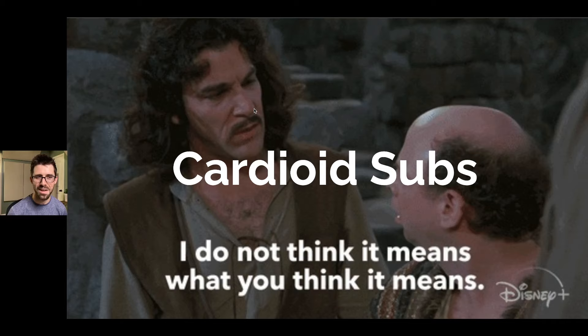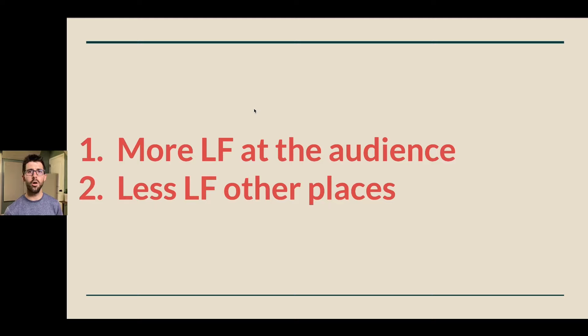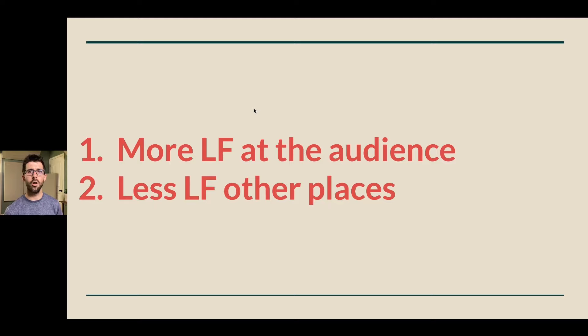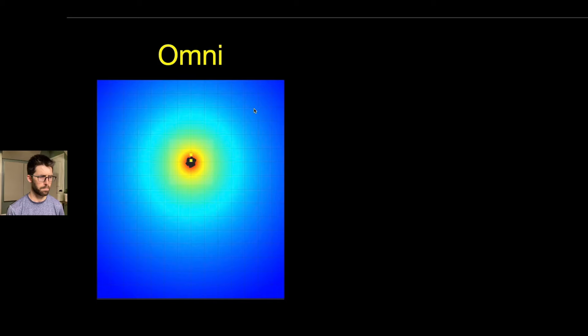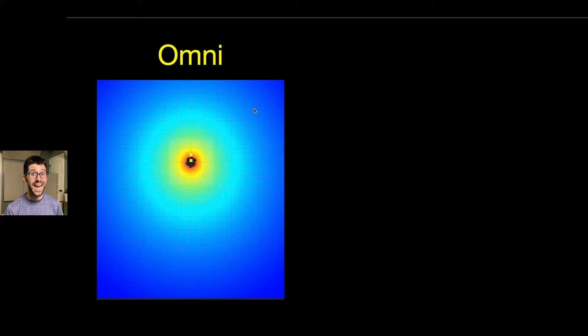So let's clarify some terms. Cardioid subs — I do not think it means what you think it means. The goal of a cardioid subarray is to steer more low frequencies at the audience and less low frequencies other places. This is the exact same idea as a mains speaker — Sound System Design 101: aim a speaker's energy at the people who need to hear it and away from walls and the stage. All we're trying to do is steer our low end away from the stage, away from walls, and toward our audience — controlling the coverage pattern — because subwoofers without fancy processing are mostly omnidirectional.